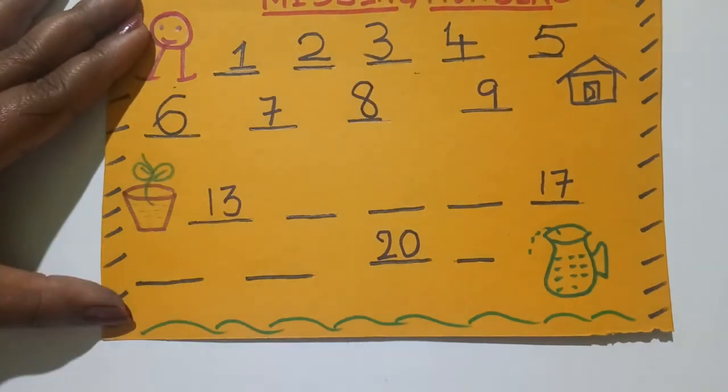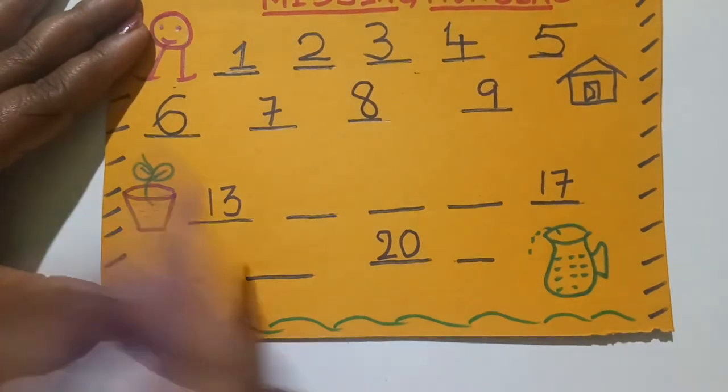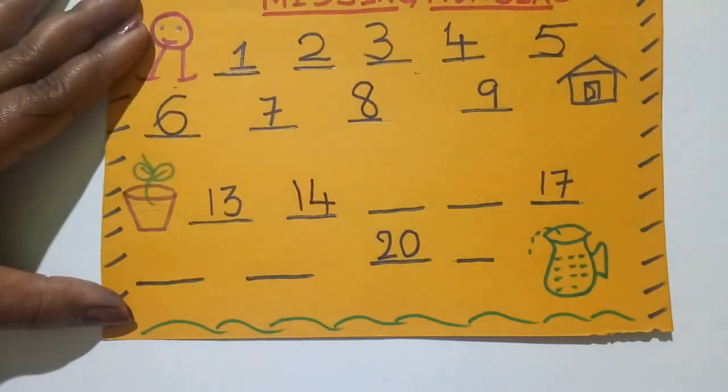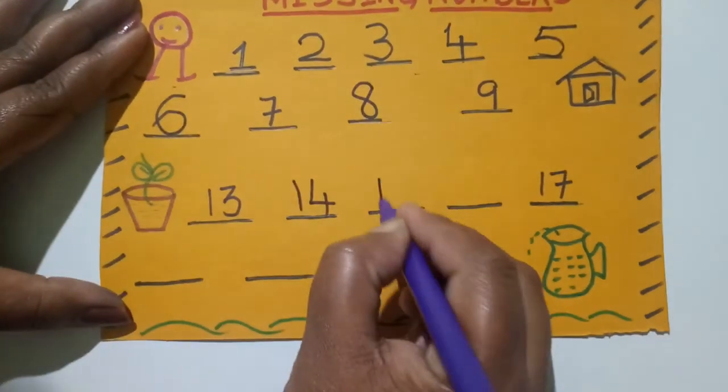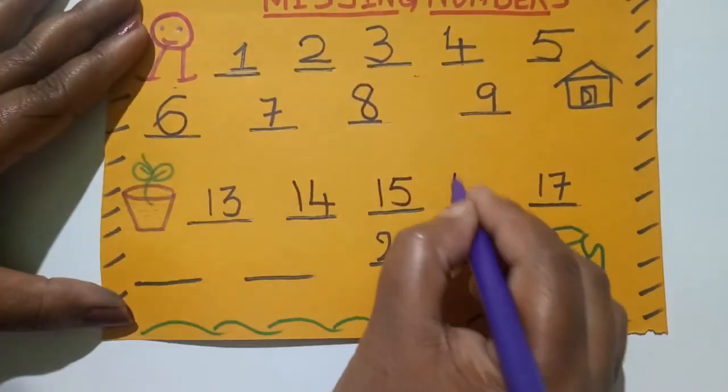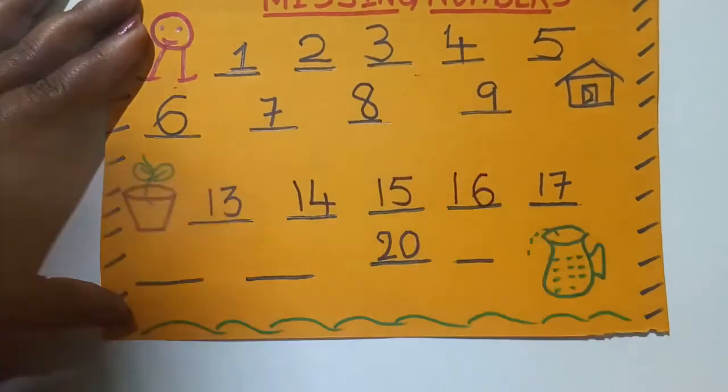So, here we have 13. That is 1, 3, 13 we have. Now, so, next number, 1, 4, 14. Am I right, children? Next number, how many of you have written next number? Majority of you must have written. It is 15. Next, 16.